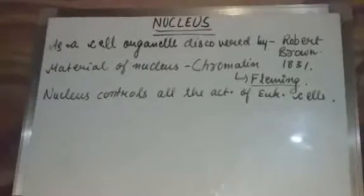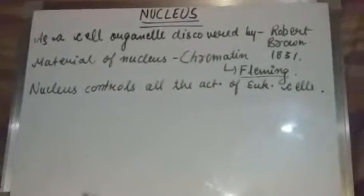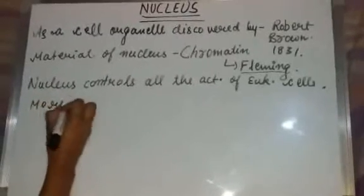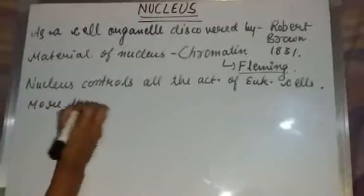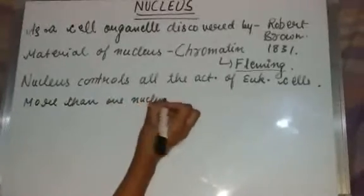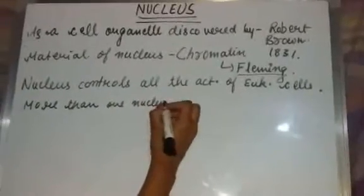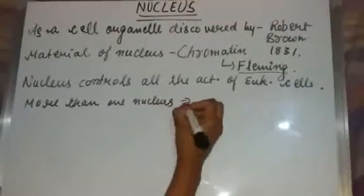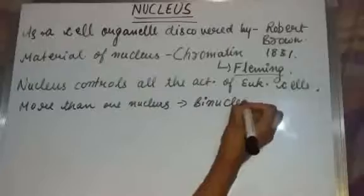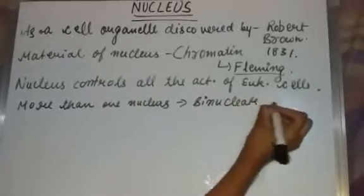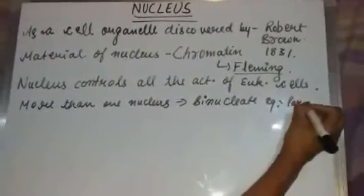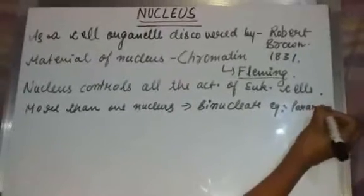There are some cells that have more than one nucleus. When two nuclei are present per cell, we call it binucleate. An example of a binucleate organism is Paramecium.